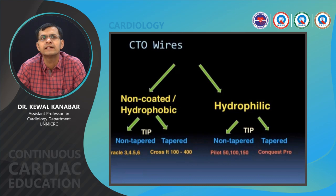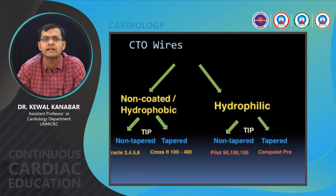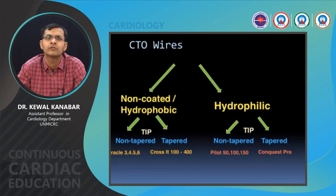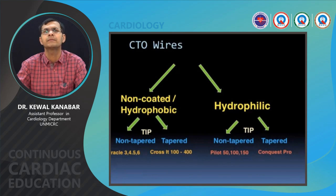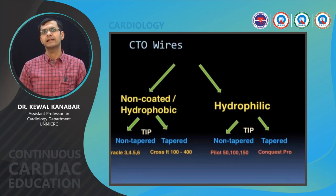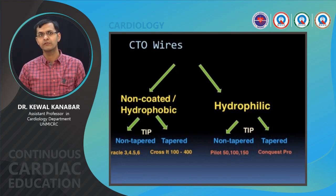CTO wires are divided into non-coated hydrophobic wires or hydrophilic wires. Hydrophobic wires include the Crossit wires and the Miracle series — Miracle 3, 6, and 12 — and the Crossit 100, 200, and 400. Hydrophilic wires can be either non-tapered like the Pilot series, or tapered like the Conquest or Confianza Pro.